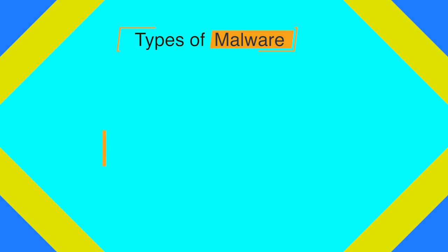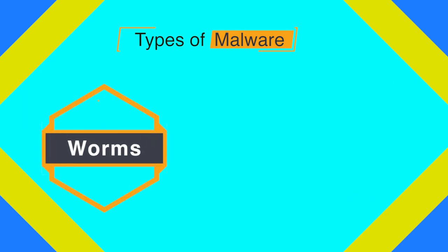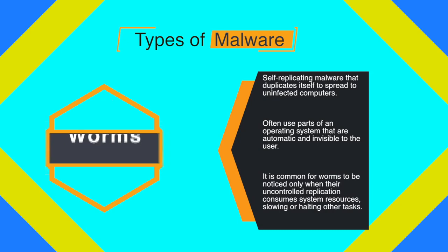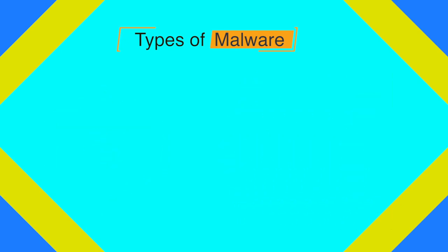The second form of malware is worms. Worms are a similar kind of malicious piece of code, but they can replicate on themselves. Once they infect a system, they can replicate within networks, reaching other networks and different computers on the same network or different networks.